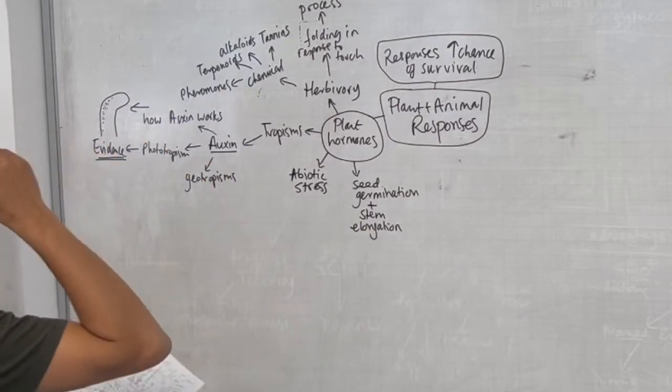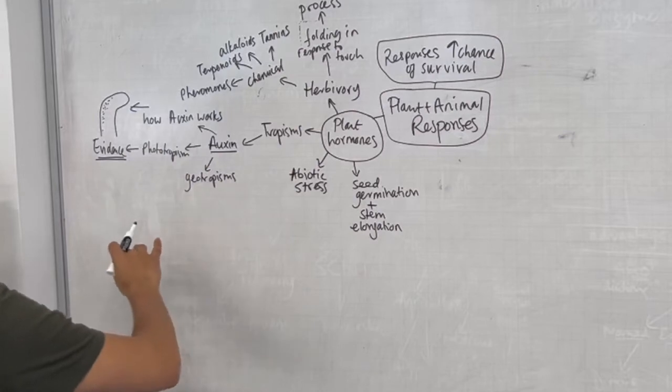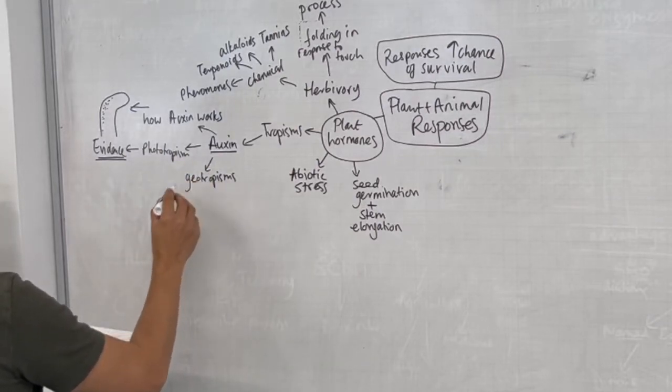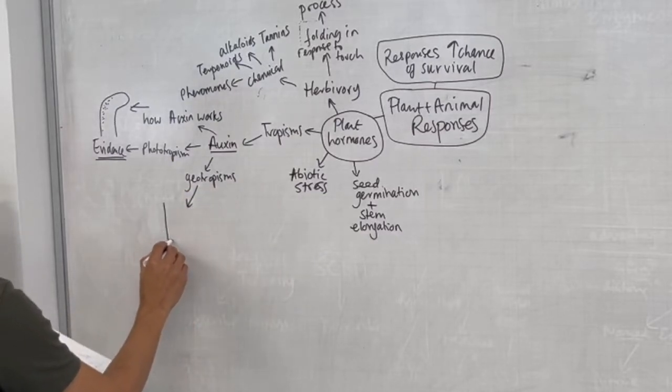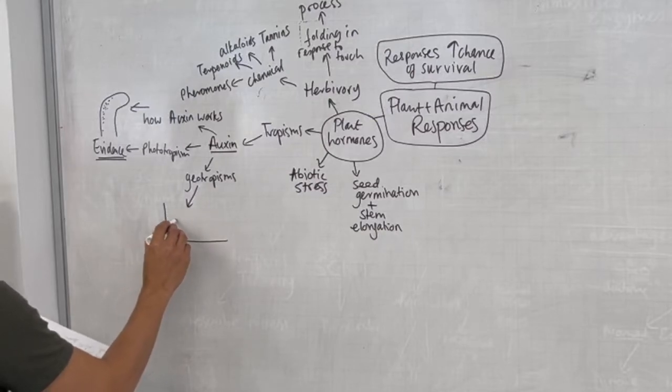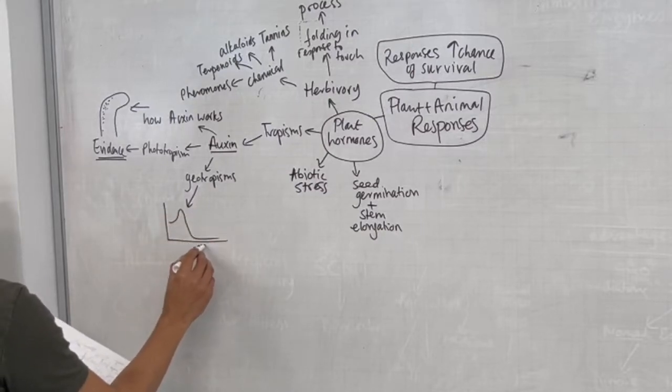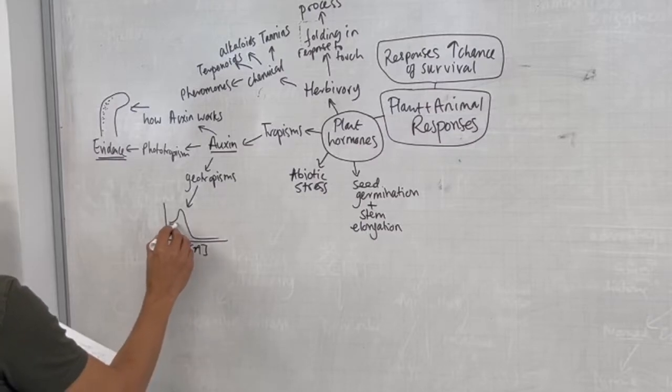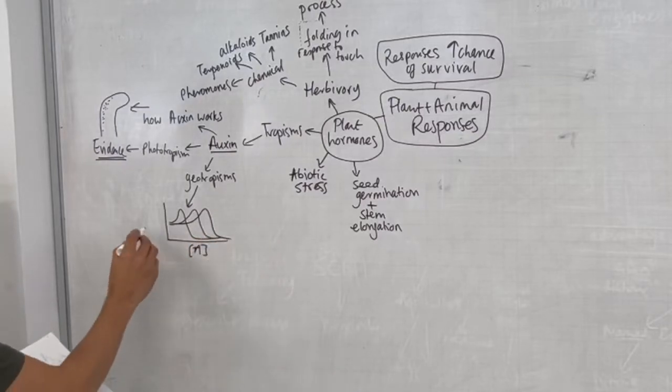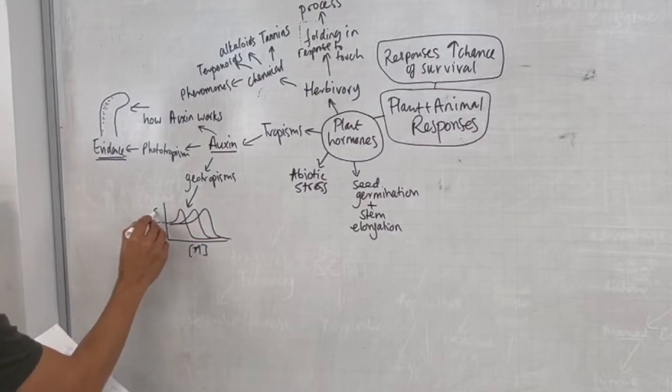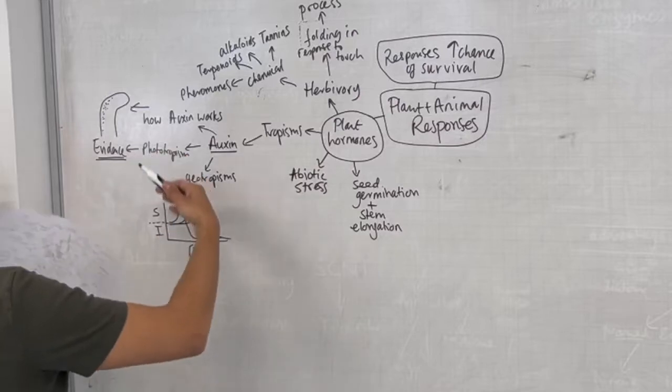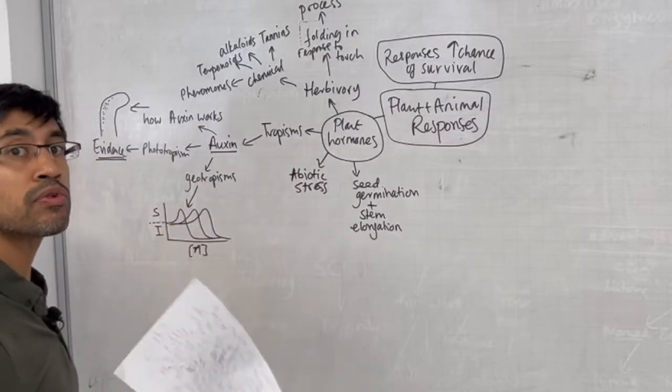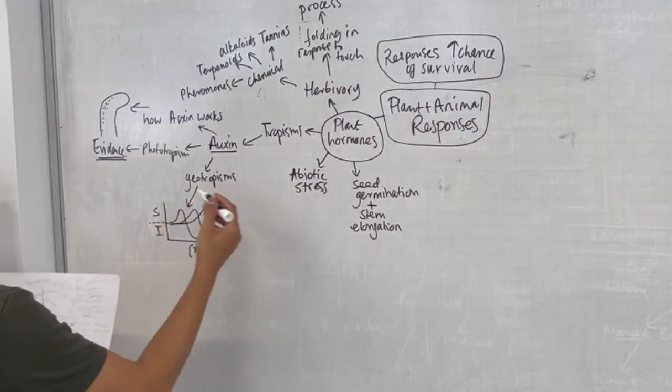From the evidence we understand how auxin causes phototropism because it accumulates on the dark side of the shoot and causes the cells on that side to elongate. If I just sketch out here the fact that auxin is accumulating here, the light is coming from that direction. Evidence to do with auxin and how auxin works are separate things. We also have geotropism, and we need to understand there's a nice graph in the textbook about how different auxin concentrations affect plant roots and shoots and buds differently.